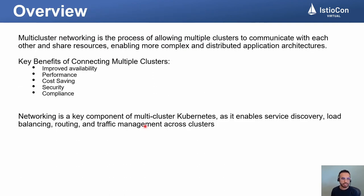Multi-cluster networking refers to the process of making multiple clusters communicate with each other so that they can share resources and allow a much more distributed application architecture. Some of the key benefits and reasons our customers adopt multi-cluster Istio are around improved availability and performance — for example, deploying instances of an application running in multiple data centers and making them available to each other. Other reasons include cost-saving, security and compliance using advanced traffic routing, such as locality-based load balancing that is supported in Istio multi-cluster today. Networking is a key component of multi-cluster Kubernetes as it enables service discovery, load balancing, routing, and traffic management across multiple clusters.